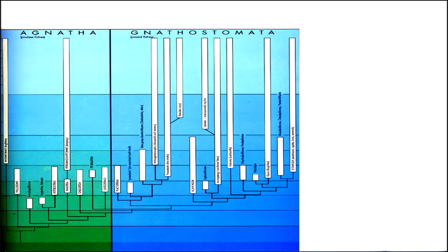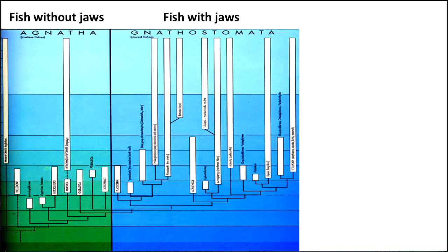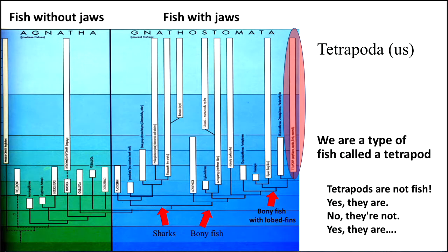Here's another tree. The agnatha are the jawless fish; the gnathostomes are the fish with jaws. You can see the sharks are fish with jaws, then the bony fish, then the bony fish with lobed fins — that's kind of like us — and then even more specifically, the tetrapoda. That's us, the four legs. We're a type of fish called a tetrapod. As you can see, we're a type of fish with a jaw.